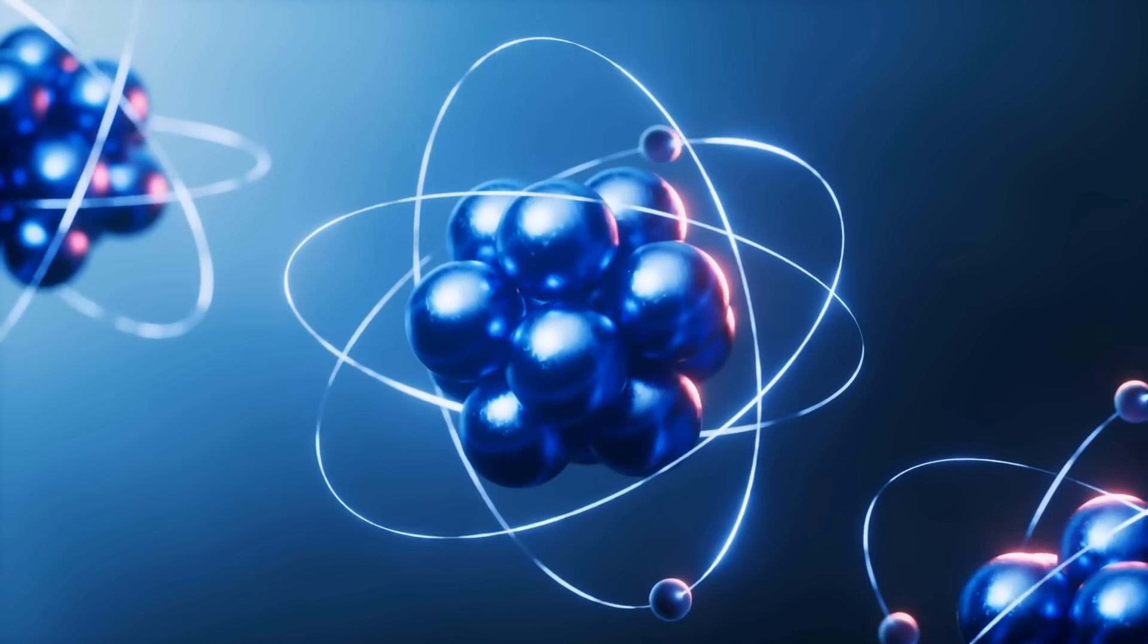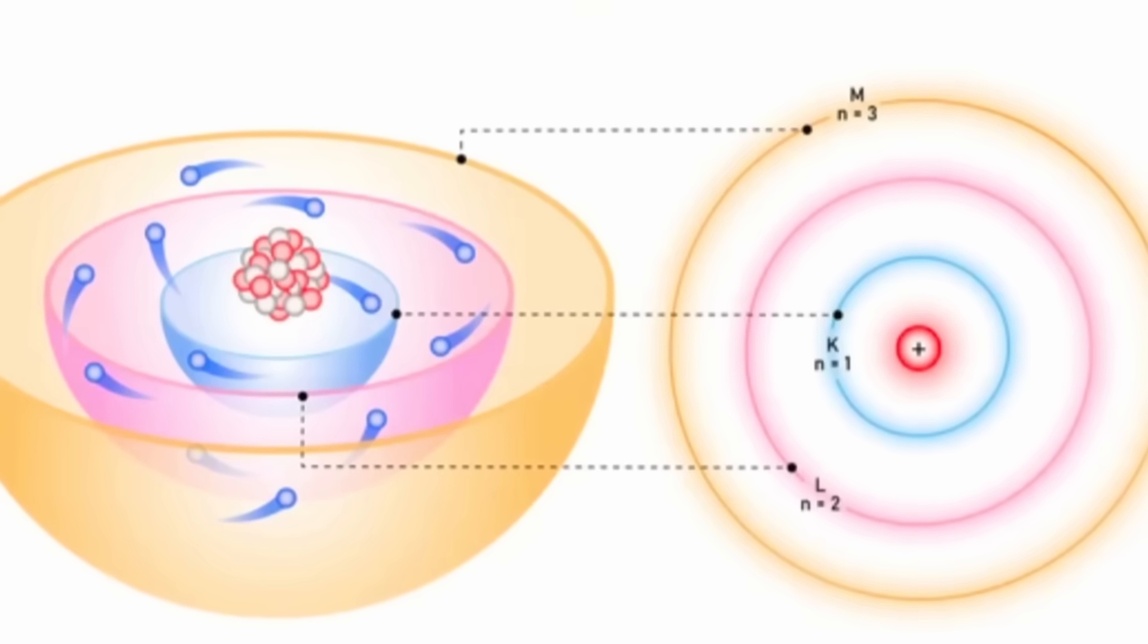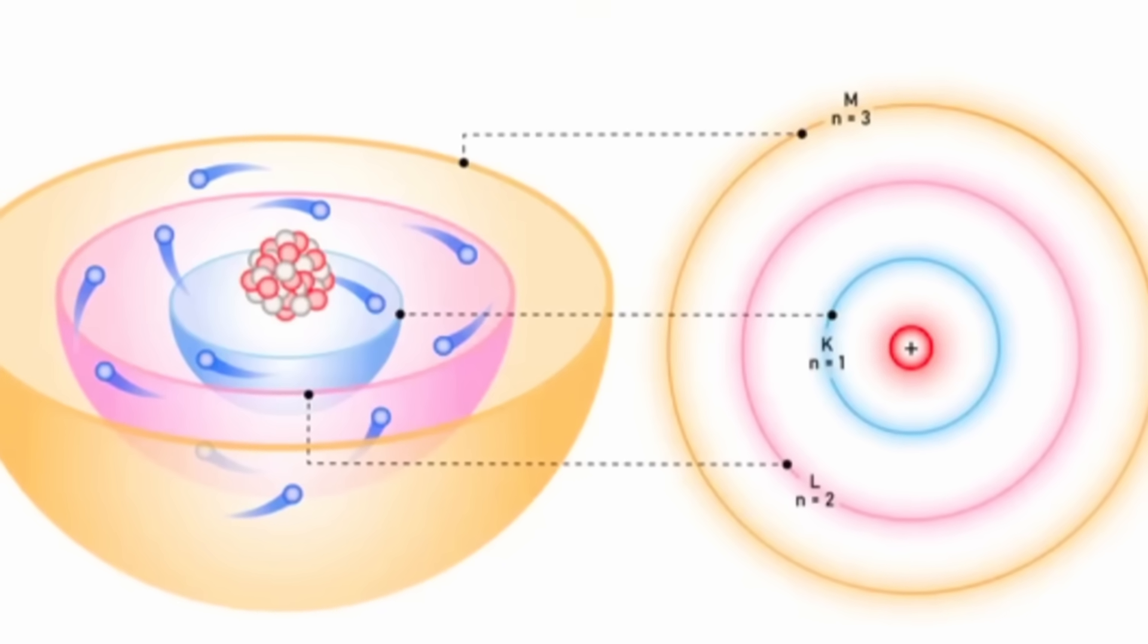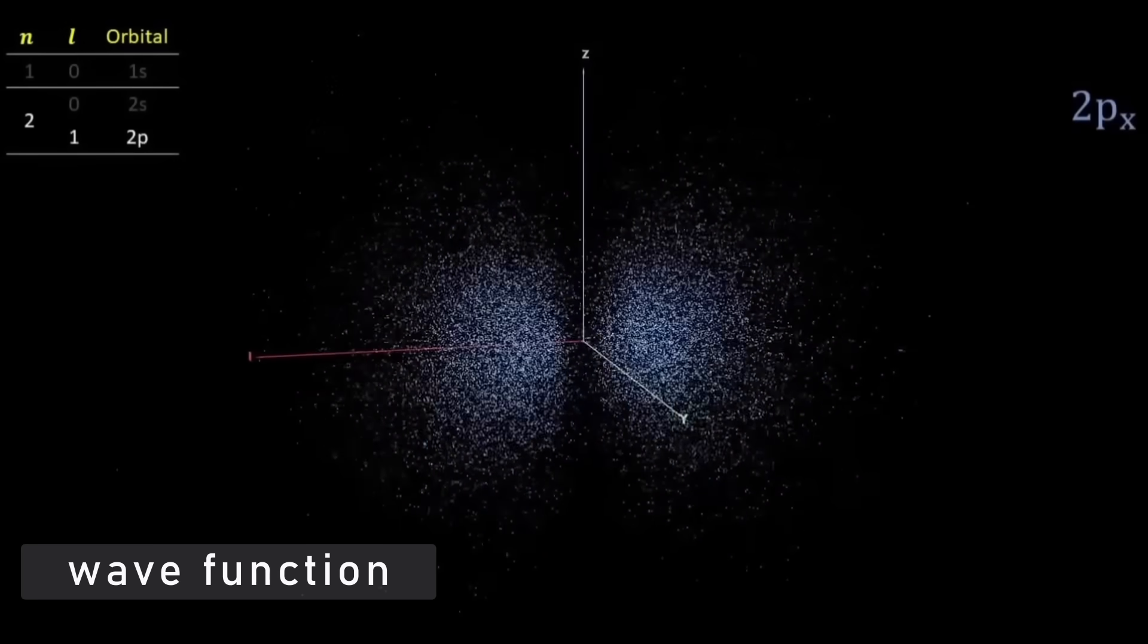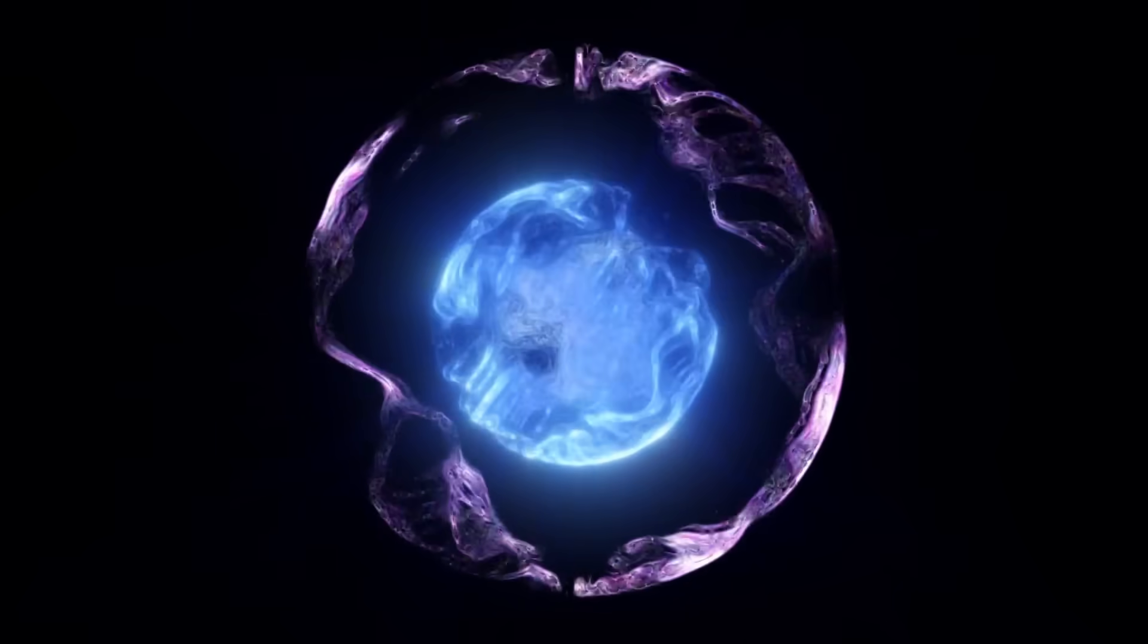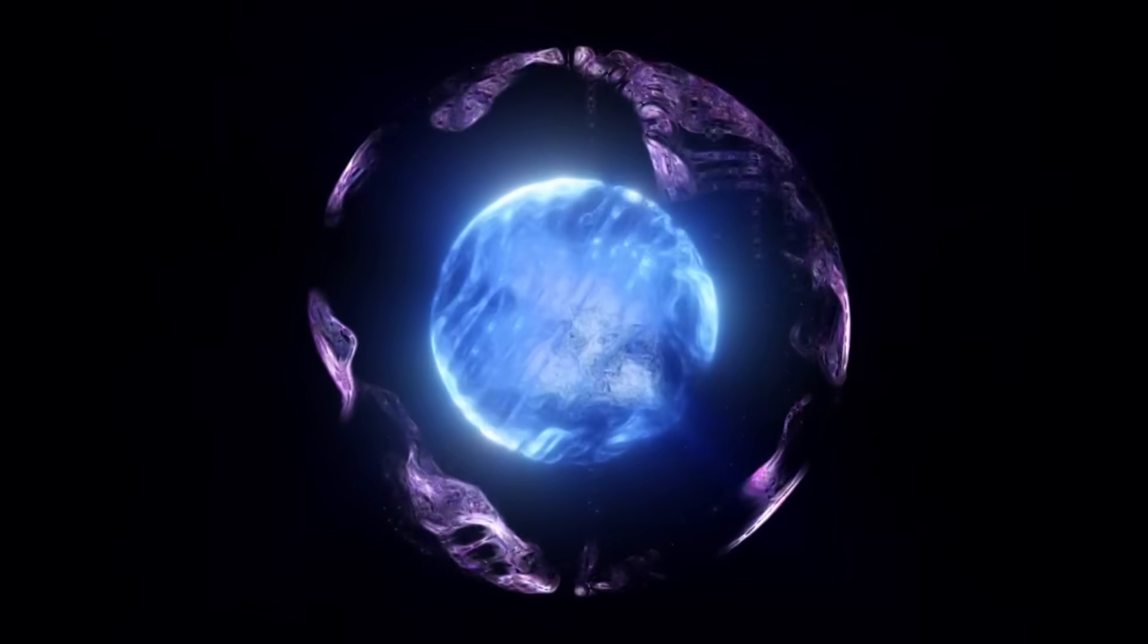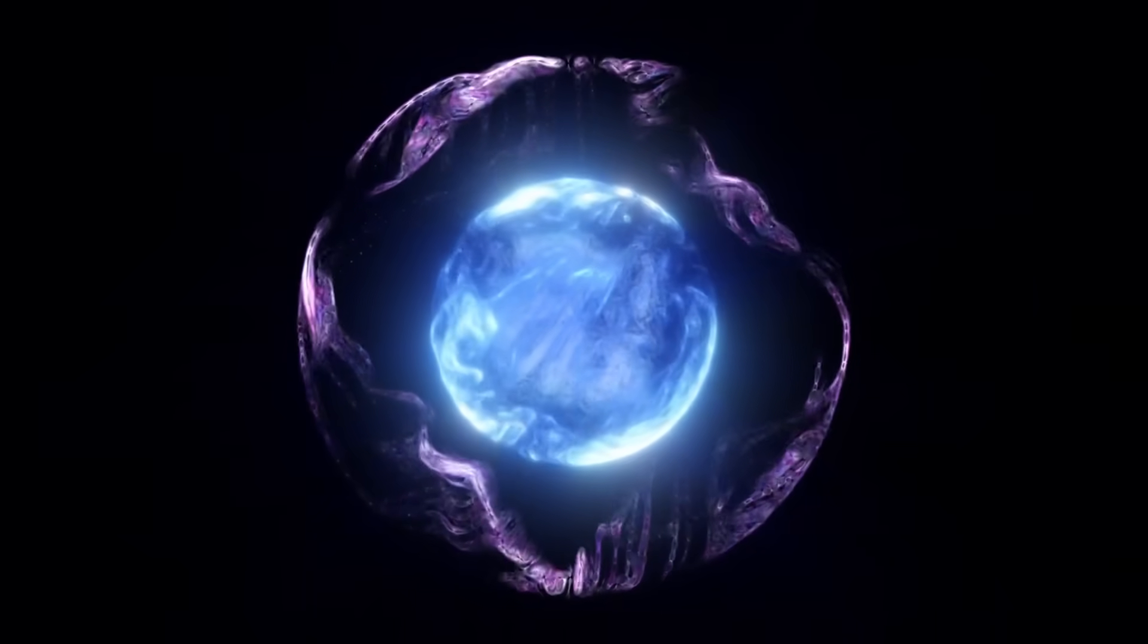Let's step in deeper. When you look at an atom, what you're really seeing is energy trapped in standing waves, like ripples in a pond that never fade. Each possible energy level isn't a layer or orbit, it's a unique shape of that wave function. In its lowest state, the wave is small and compact, surrounding the nucleus like a glowing sphere.